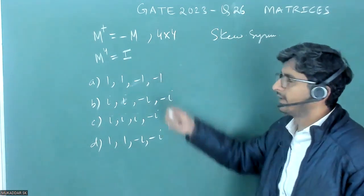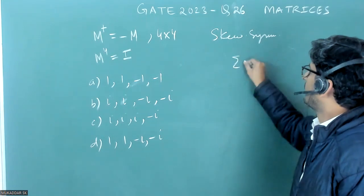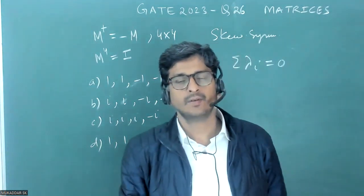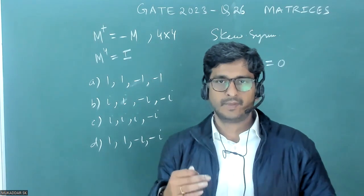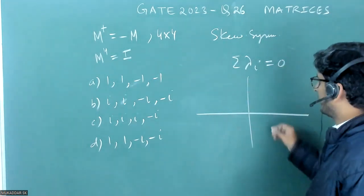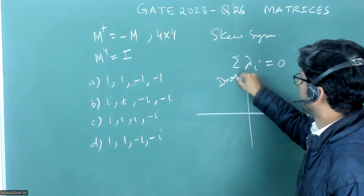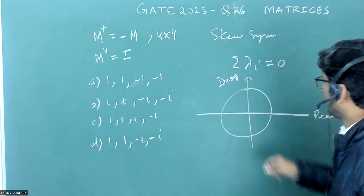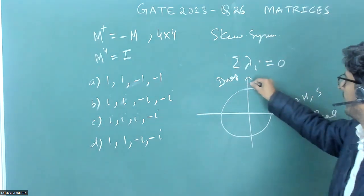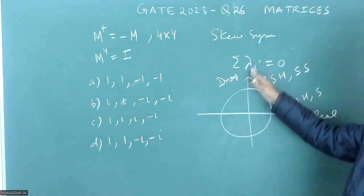The question asks which of the following may be eigenvalues of M. For a skew symmetric matrix, the sum of eigenvalues is equal to zero, and the eigenvalues are either purely imaginary or zero. Recall the diagram with the real axis and imaginary axis: Hermitian and symmetric matrices have eigenvalues on the real axis, while skew Hermitian and skew symmetric matrices have eigenvalues on the imaginary axis.